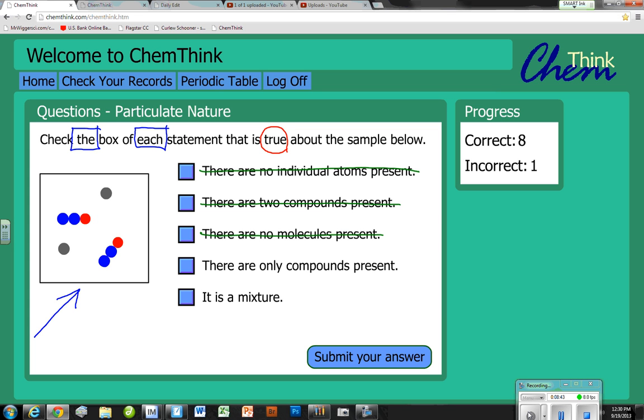'There are only compounds present' - that is not true. We have here a compound and an element, so this guy is gone. There's only one left - 'This is a mixture.' Of course it is. It's a mixture of an element because of these guys and a compound because of these two guys, and there's our answer.